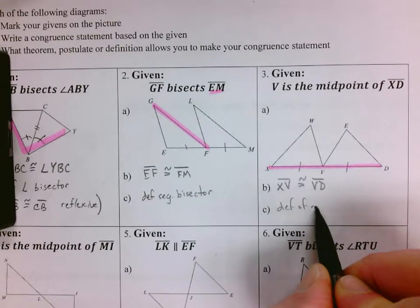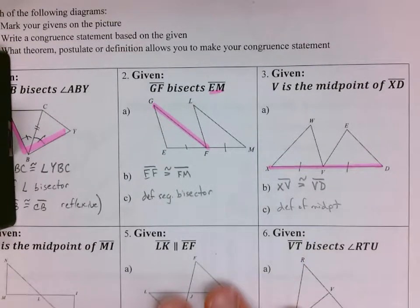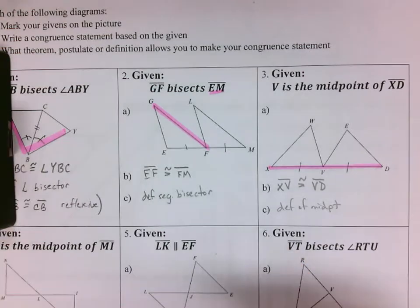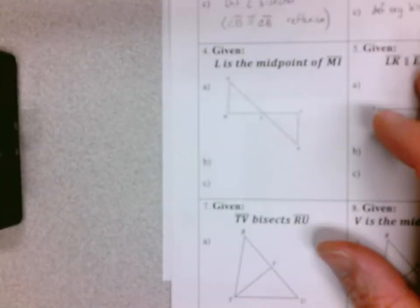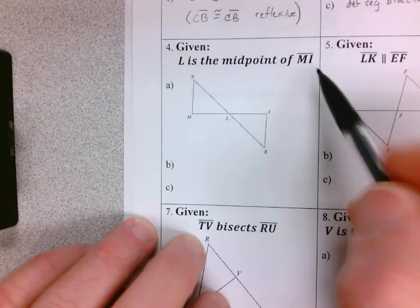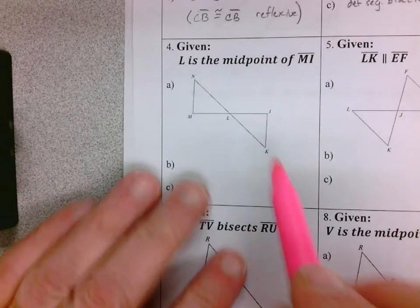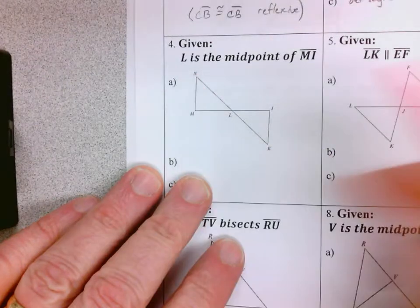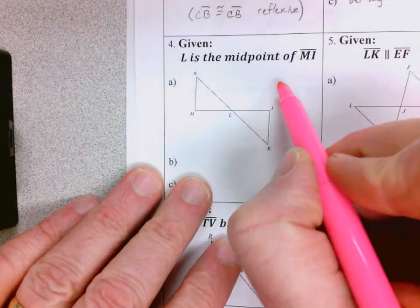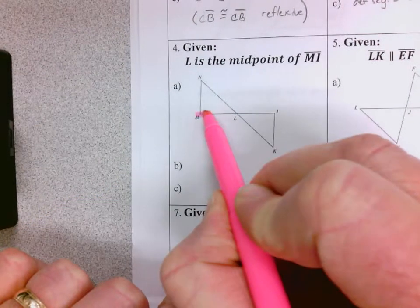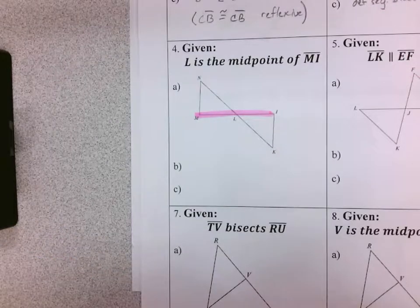A midpoint cuts a segment. A midpoint is a bisector, it's just a point that bisects. L is the midpoint of segment MI. Again, you want to make sure that you're marking the correct things congruent.